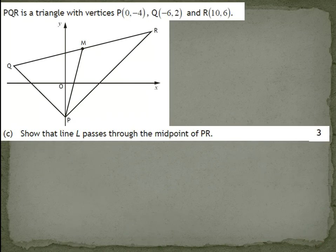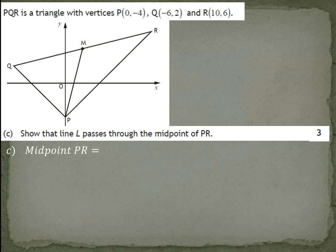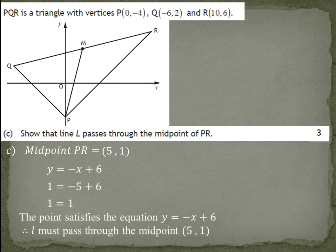Last but not least, show that line L passes through the midpoint of PR. What we check is we find the midpoint of PR. If P is (0, -4) and R is (10, 6), therefore the midpoint is (5, 1). To check if it does run through, we're going to be using the skill that was covered in the previous video of checking if a point lies on a line by subbing it in and checking left equals right. Since left does equal right, you can make a statement saying the point satisfies the equation y equals minus x plus 6, therefore L must pass through the midpoint (5, 1).